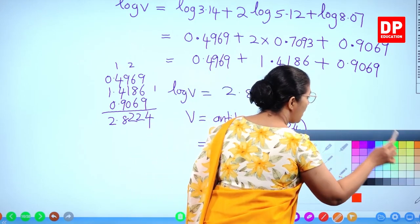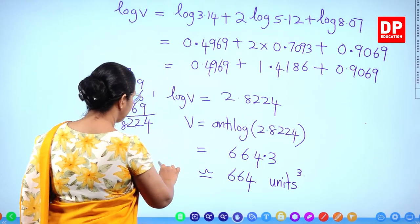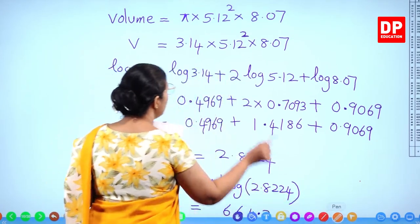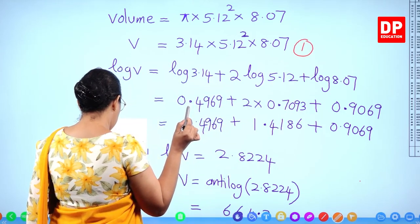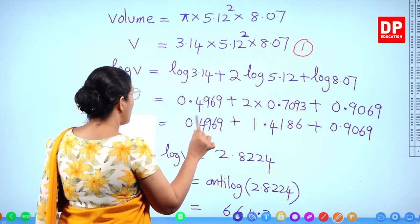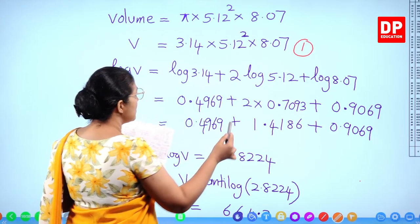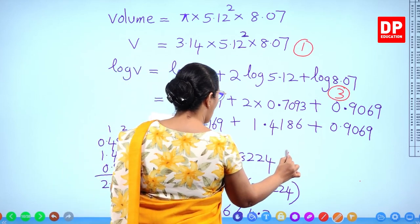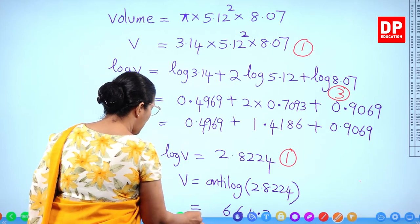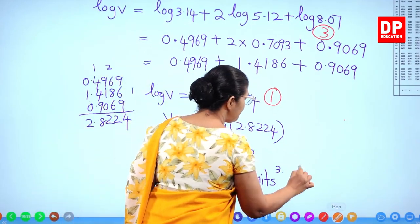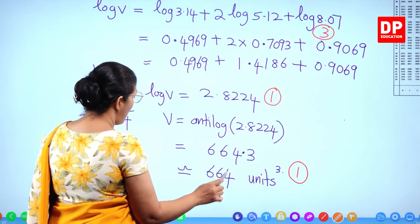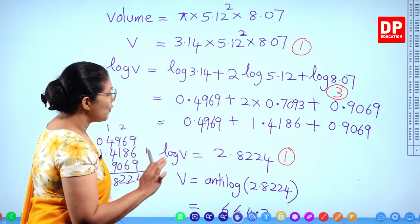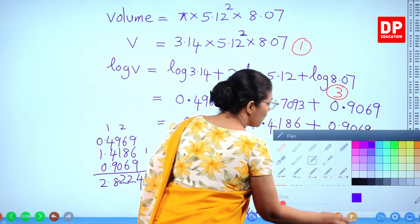Marking scheme: 1 mark for substituting values, 3 marks for log calculations, 1 mark for antilog step, 1 mark for final answer 664 — 6 marks for this part. Together with the 4 marks from the previous part, 10 marks total for question 5.